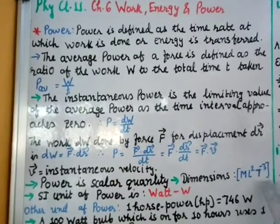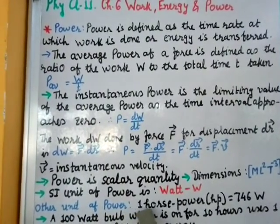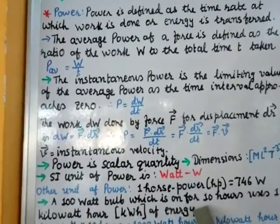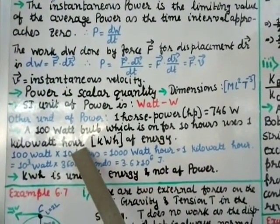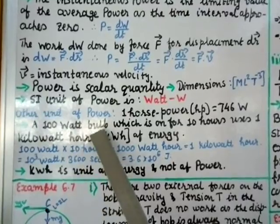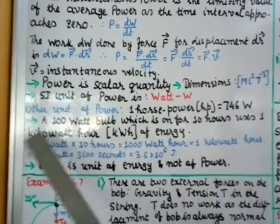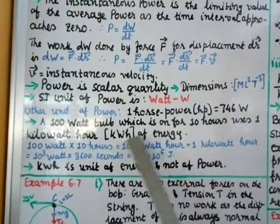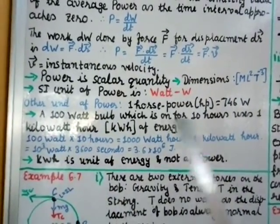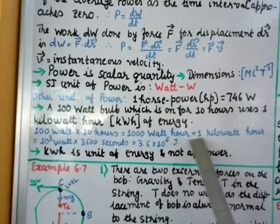The dimension of power is ML²T⁻³. The SI unit of power is watt, symbol W. Another unit is horsepower: 1 hp equals 746 watts. A 100-watt bulb on for 10 hours uses one kilowatt-hour (kWh) of energy — kilowatt-hour is a unit of energy, not power.